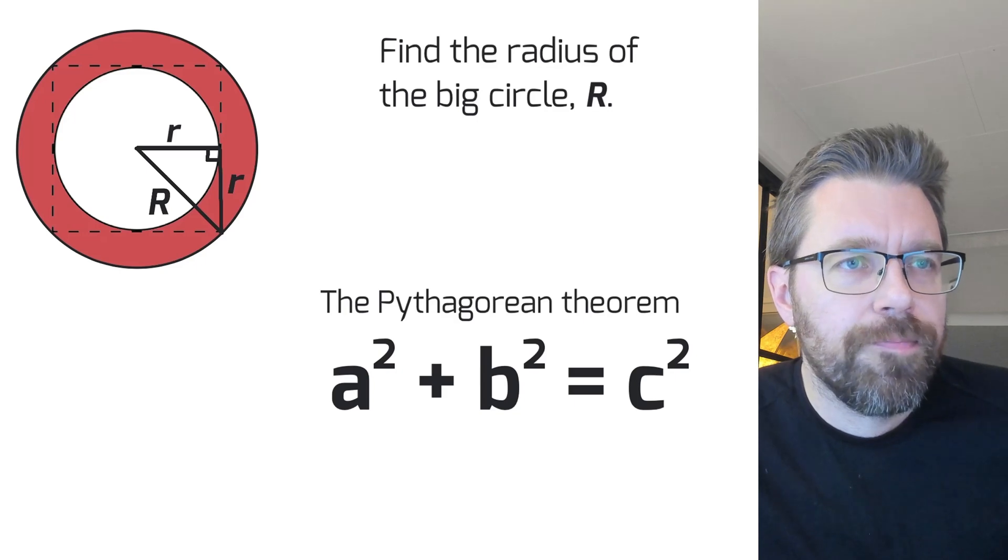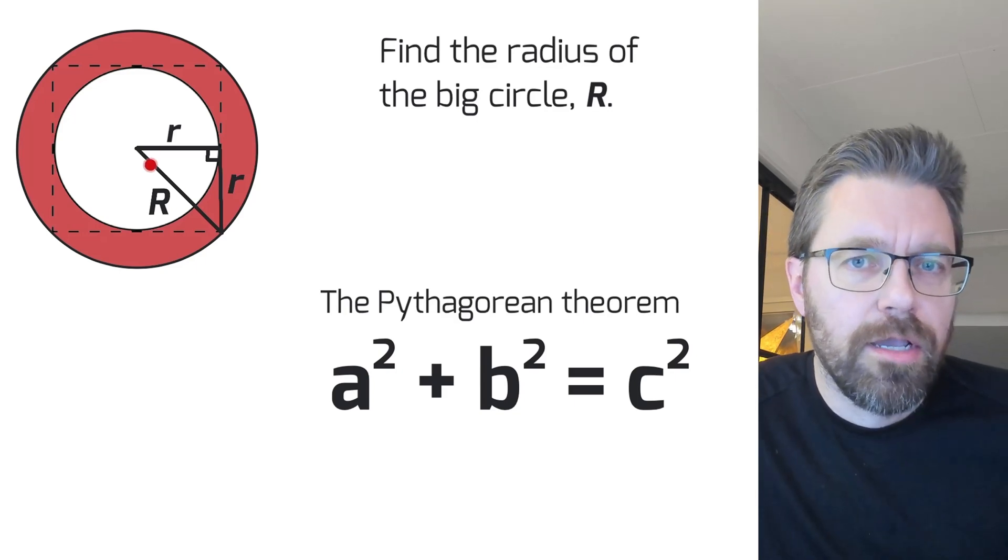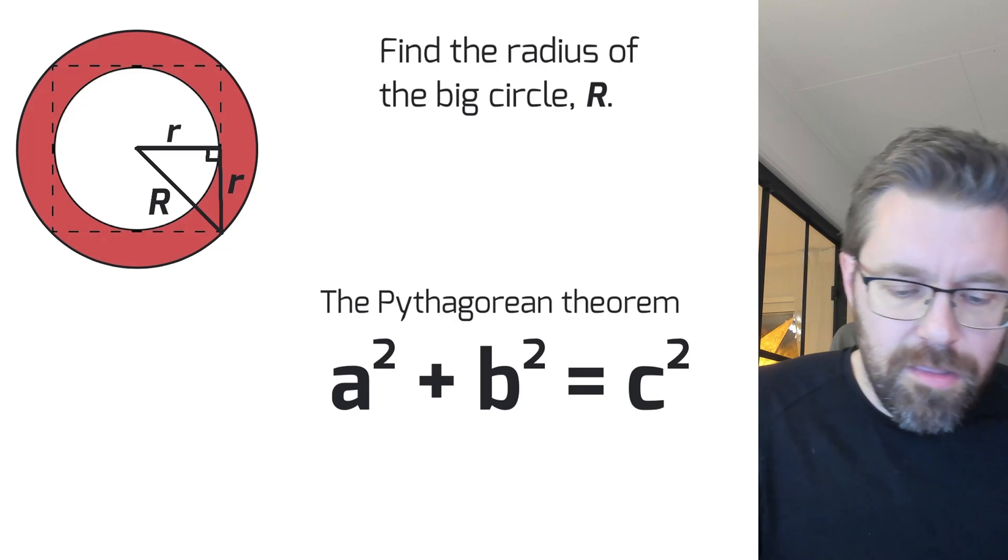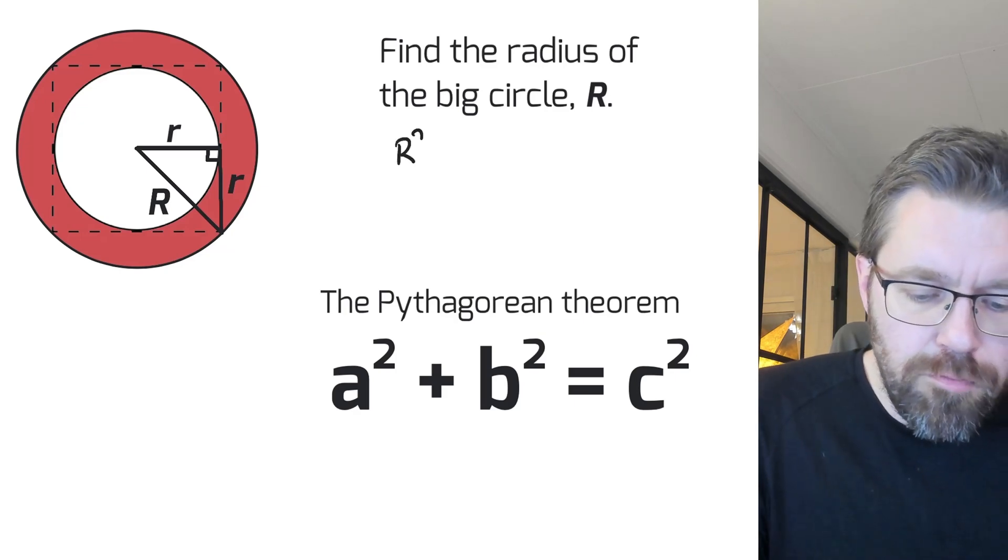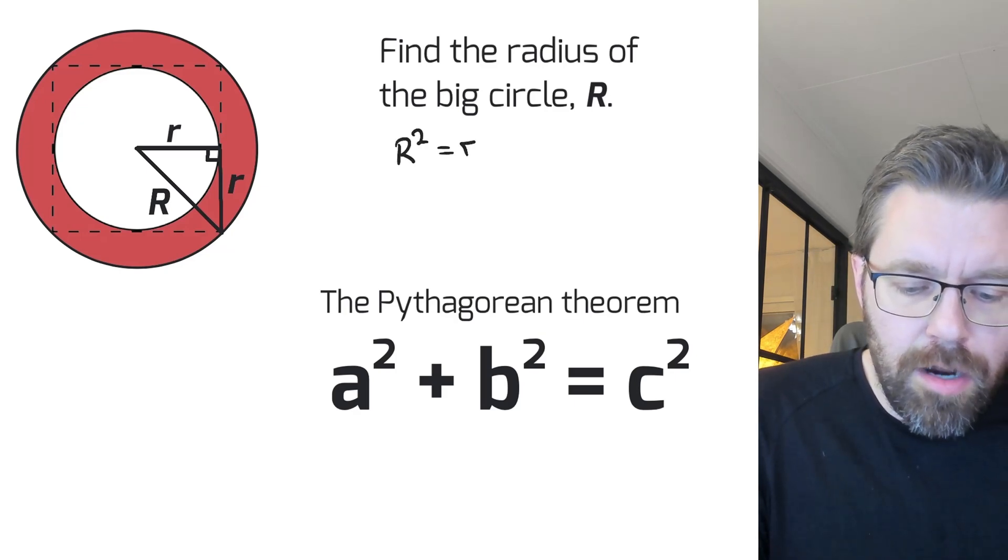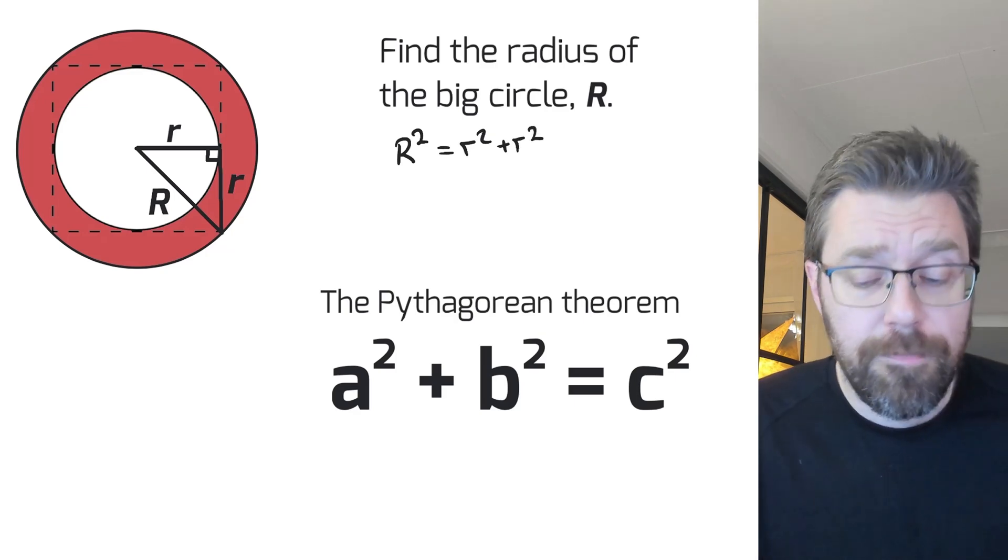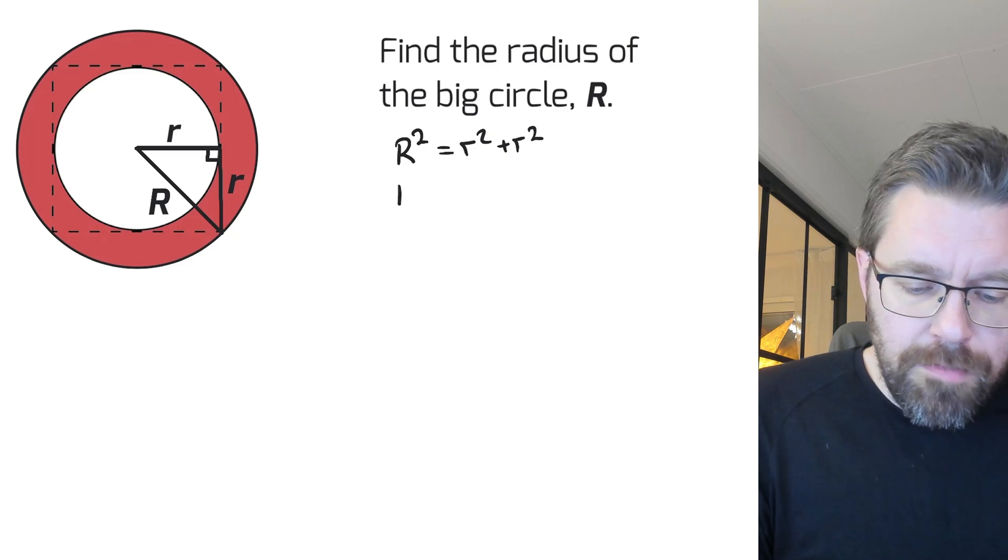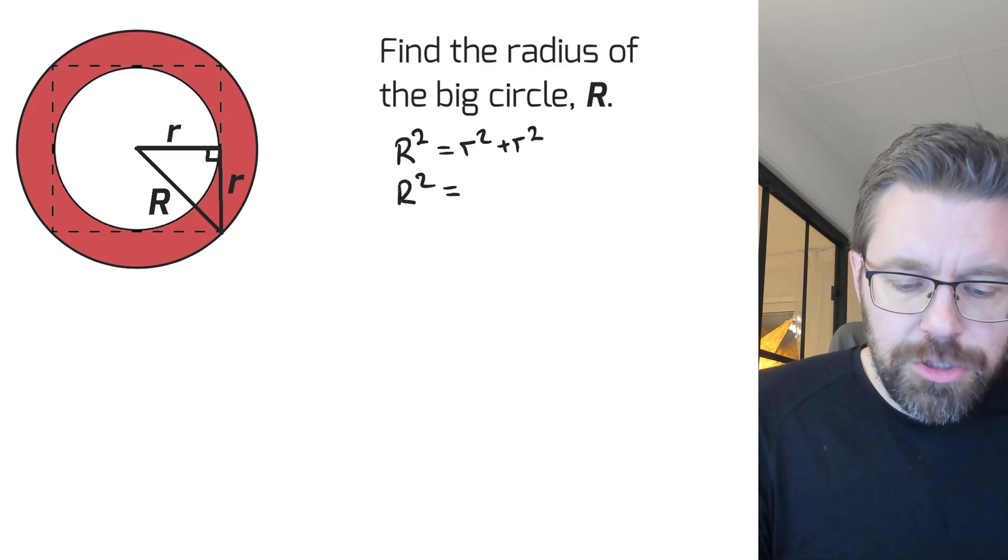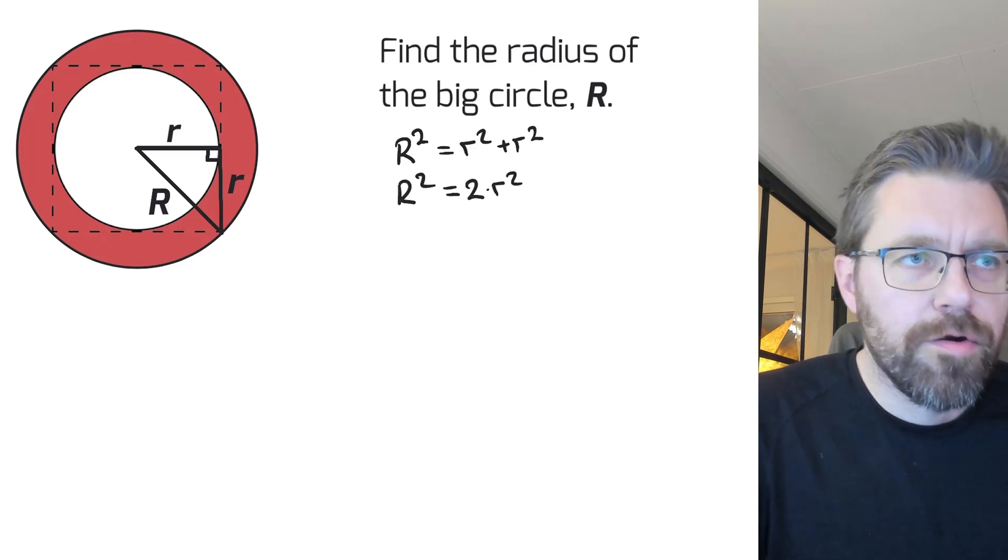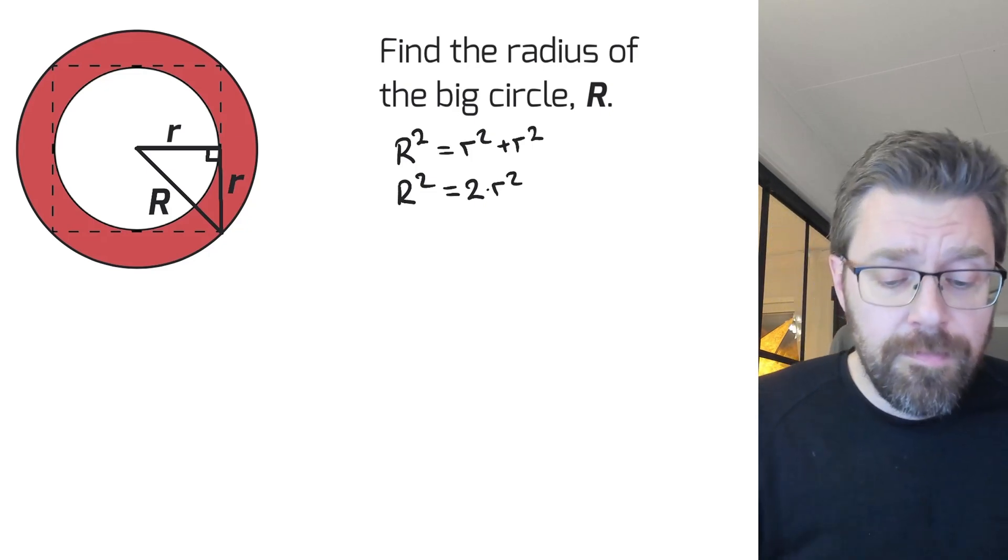So the longest side in our triangle is the big R, so big R squared equals little r squared plus little r squared. So big R squared equals two times r squared.